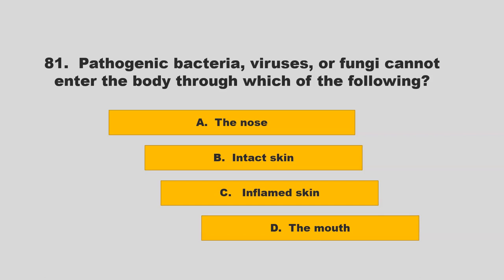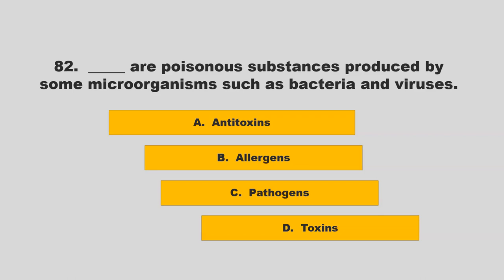Pathogenic bacteria, viruses, or fungi cannot enter the body through which of the following? Options: the nose, intact skin, inflamed skin, or the mouth. The correct answer is B: intact skin.